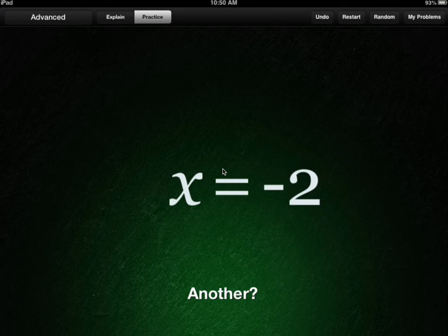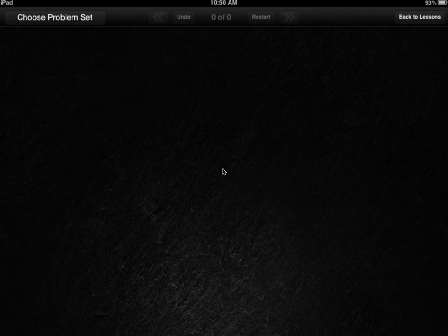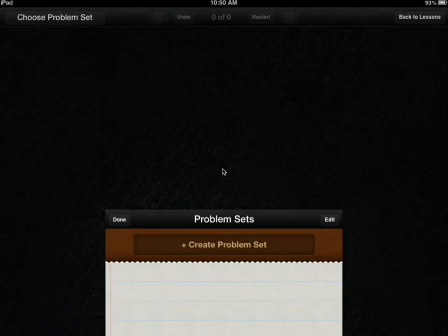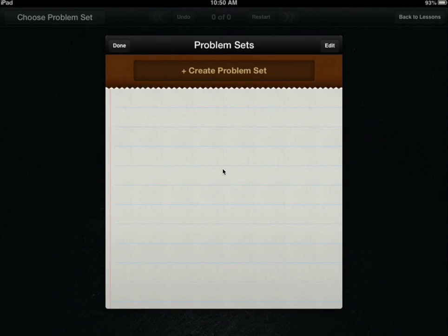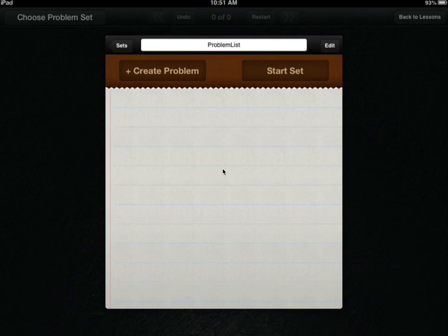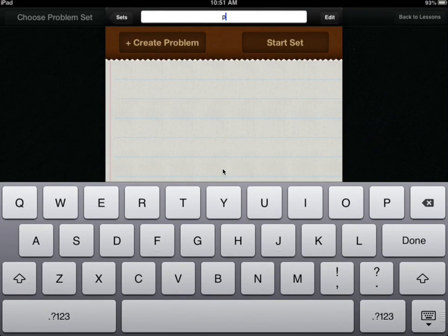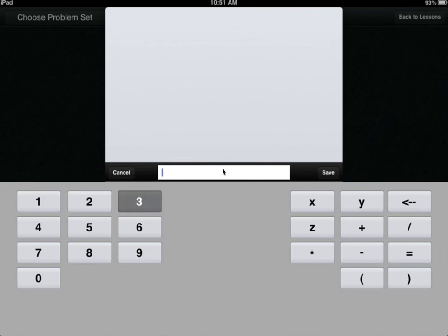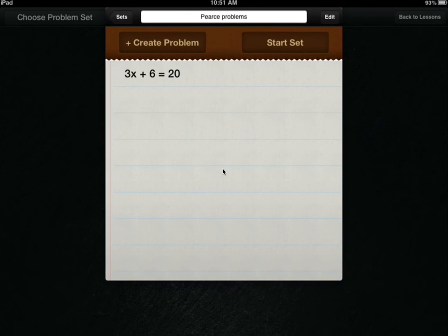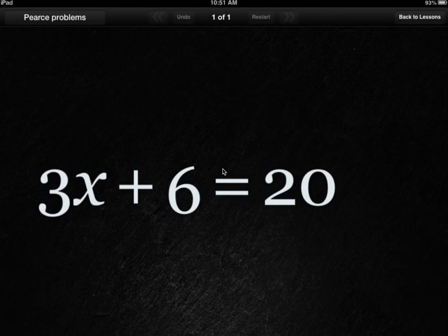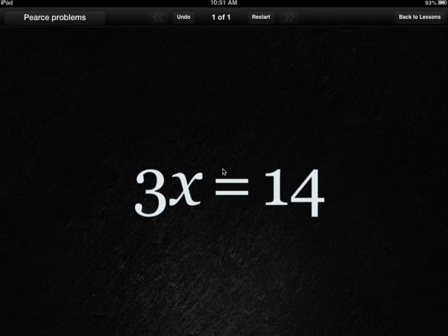Last feature I'm going to talk about before we end this video here is the My Problems in the top right. Something cool that you can do once students are comfortable with the app is they can actually create their own problem sets and then obviously allow them, their friends, maybe pass on their iPad to a friend to do them. So they can click create a problem set. So here they can type in, this is Pierce's problems. And then I can actually go ahead and start creating some problems. So I could say 3x plus 6 equals 20 and then save them. And once they've created some problems, their friends can actually start doing the problems that they've created. So some pretty cool stuff.